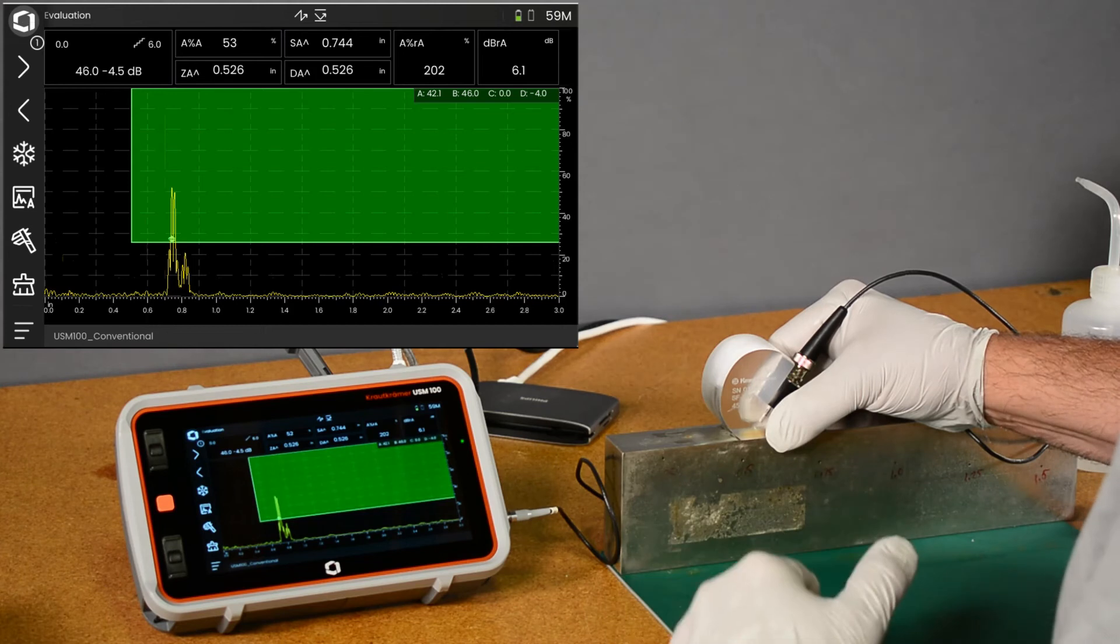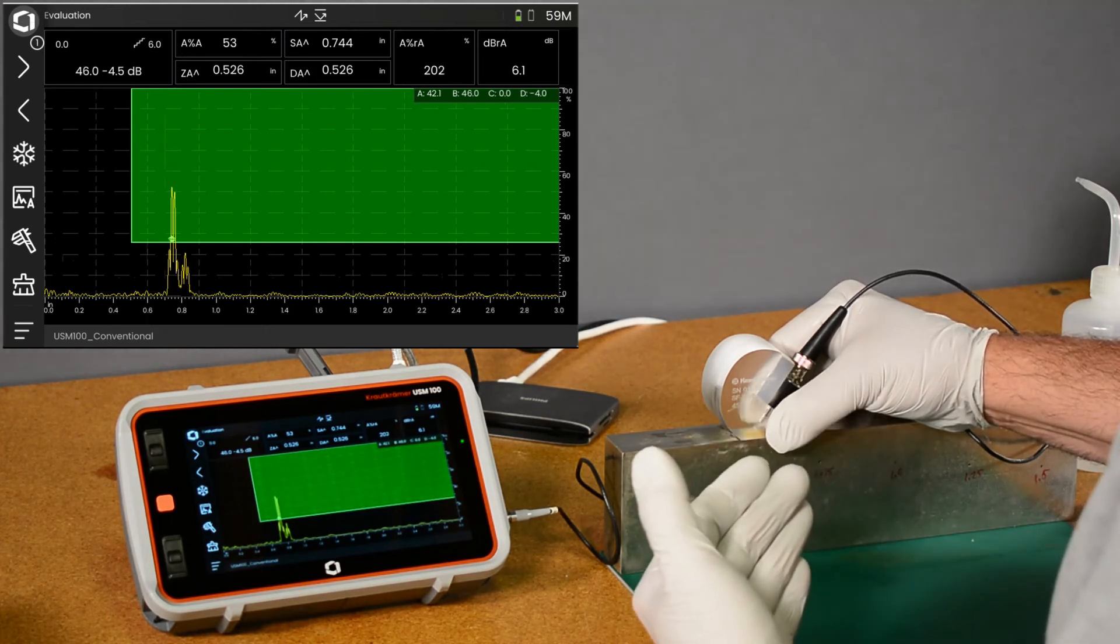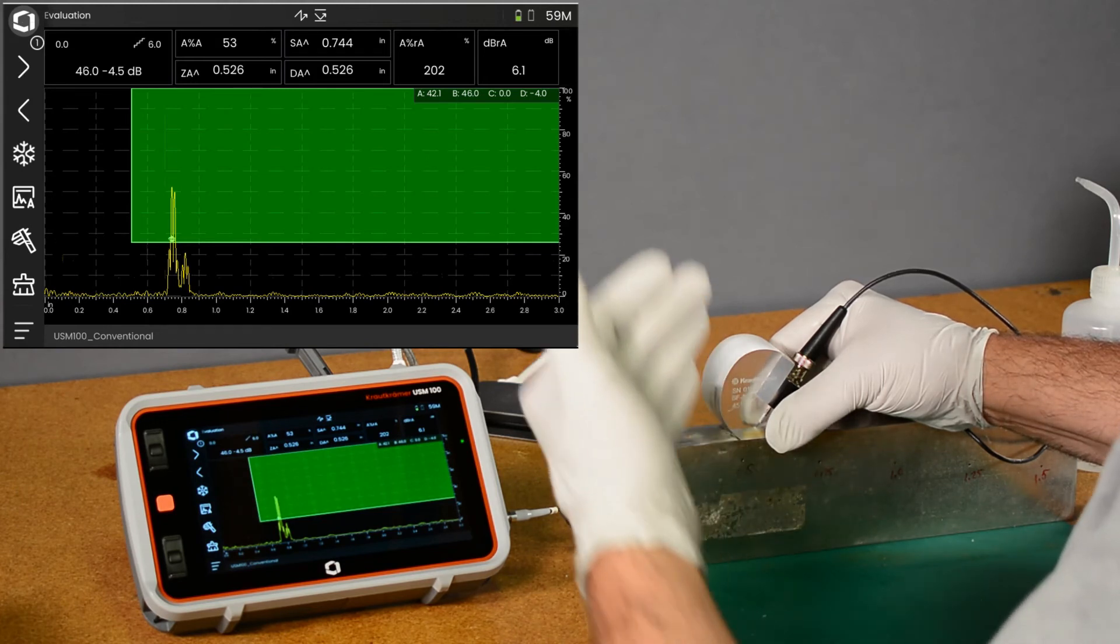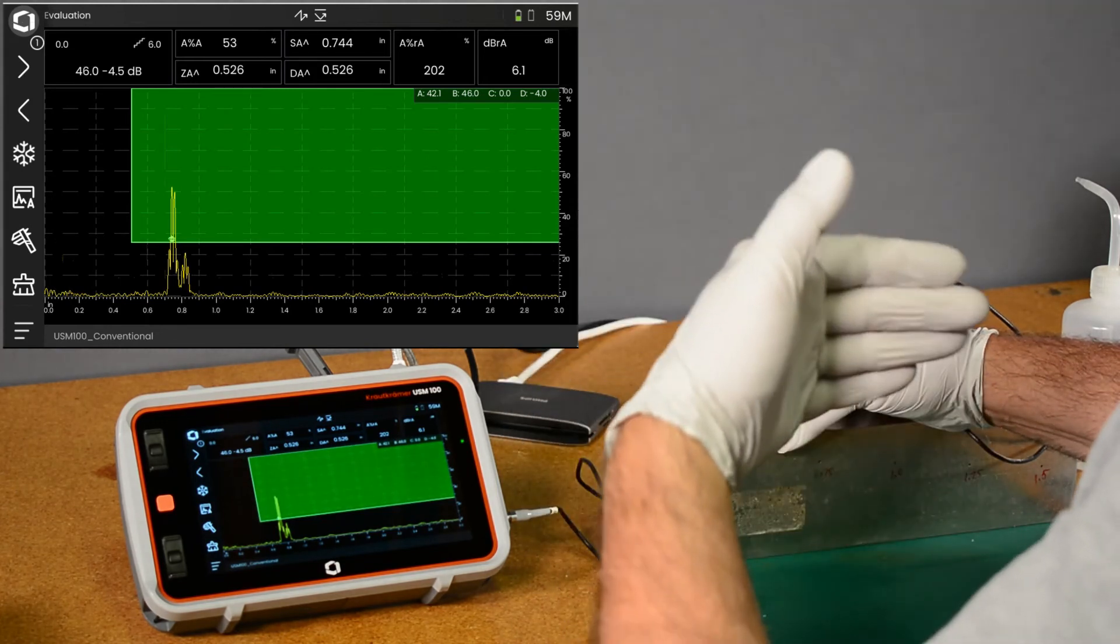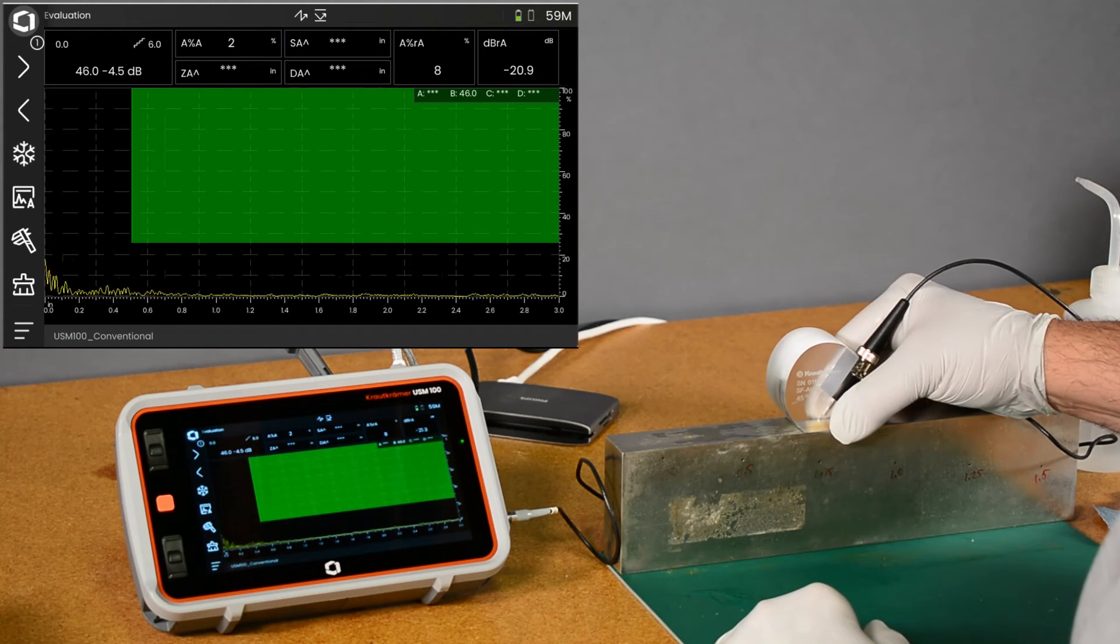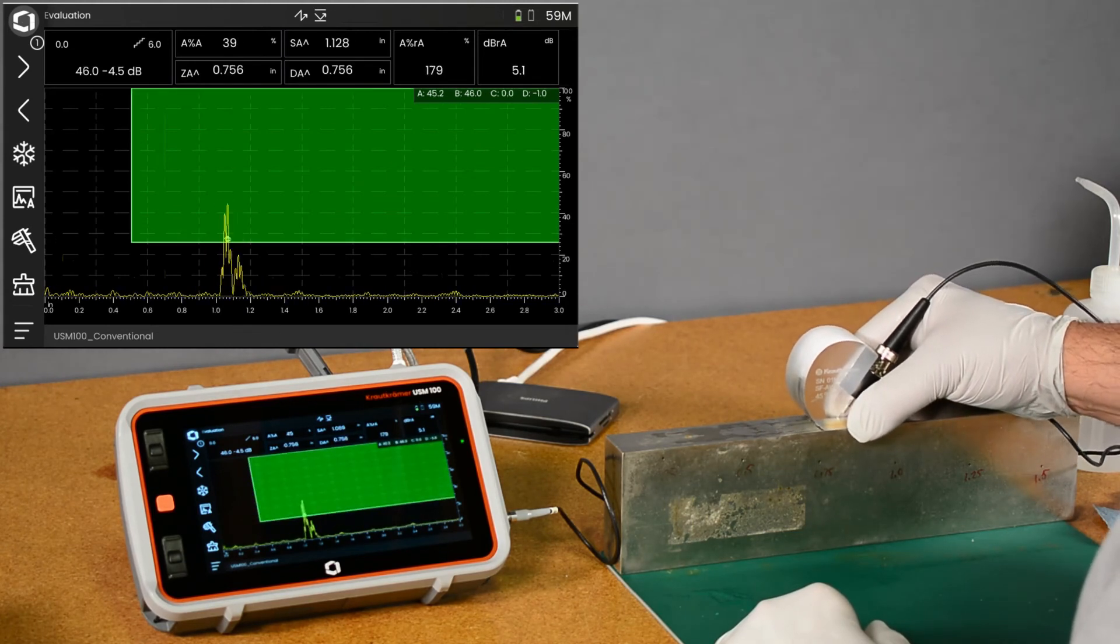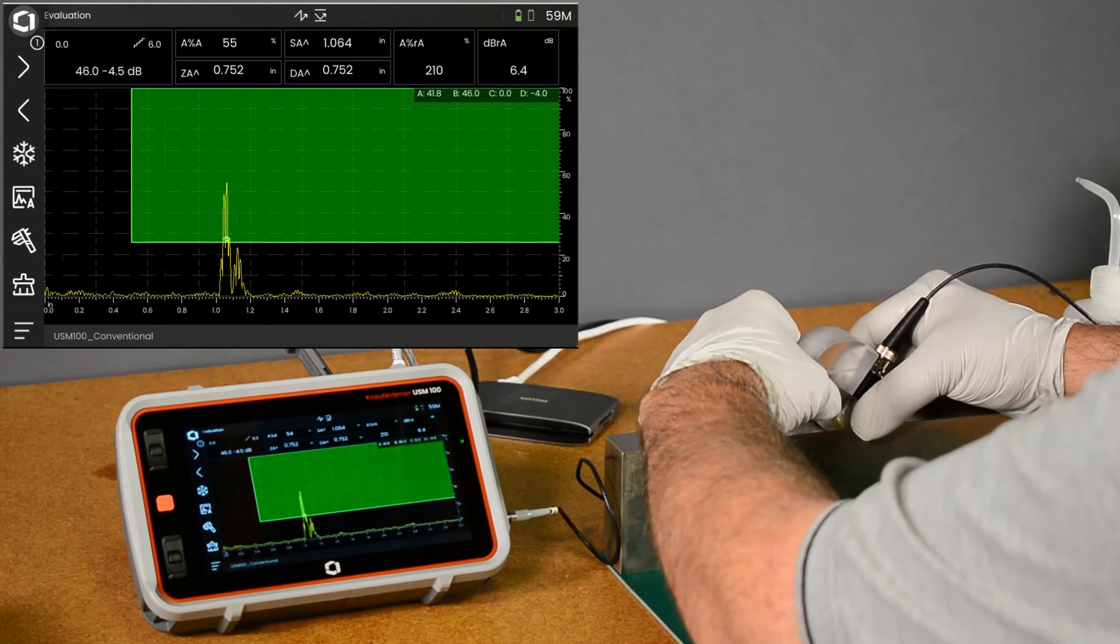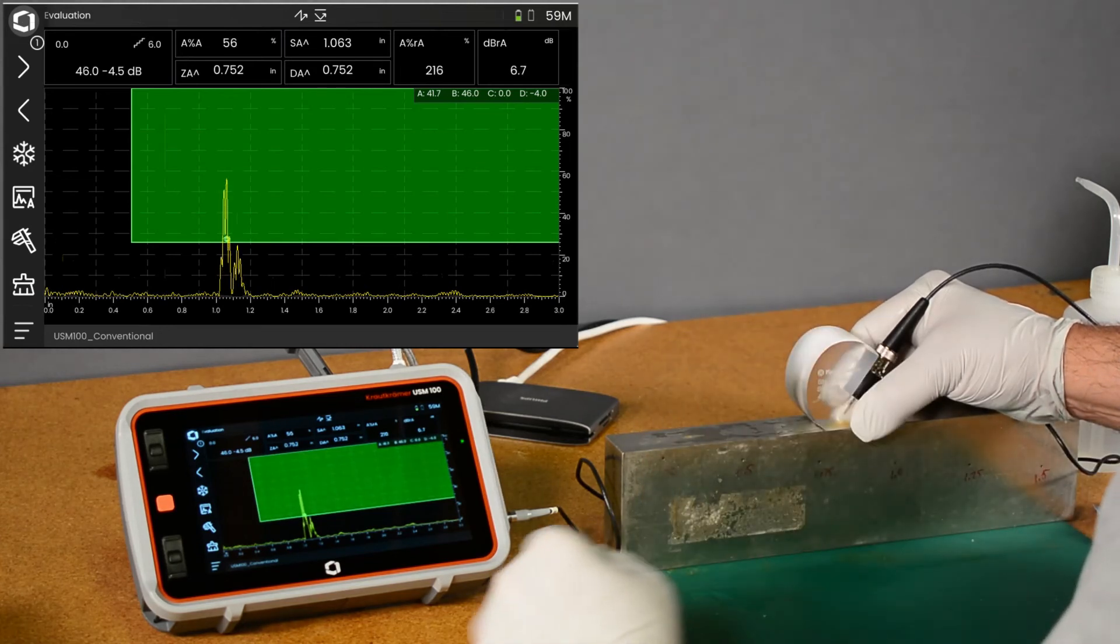My material attenuation correction is still zero because I'm still under an inch of sound path. My D parameter, taking A minus B minus C equals D, is now minus four. The more negative the number, the larger the flaw is in comparison to the calibration. More negative is a larger indication, a larger reflector. Let's slide back here and peak up on the next indication at three quarters of an inch deep, about an inch of sound path.